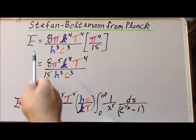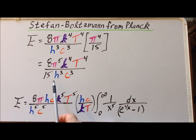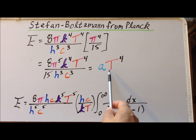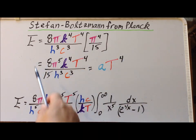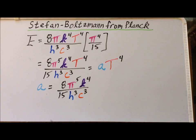Multiplying and collecting terms, we get that the emissivity is now 8π to the fifth k to the fourth T to the fourth divided by 15 times h cubed times c cubed. Recall that a standard way of writing the Stefan-Boltzmann law is as a times T to the fourth power. So we set these two expressions equal and we can solve for this constant a. Solving, we get that this constant a is equal to 8π to the fifth k to the fourth divided by 15 h cubed times c cubed.